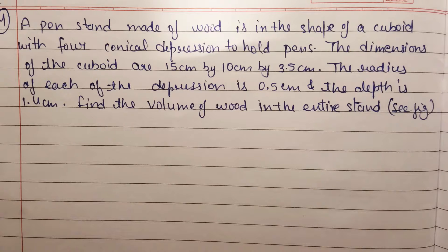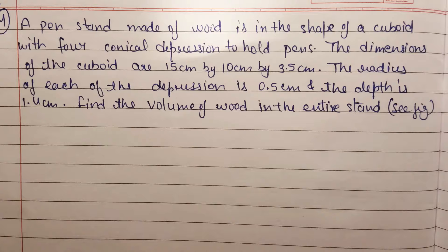We have a statement: a pen stand made of wood is in the shape of a cuboid with four conical depressions to hold pens. We have a pen stand made of wood, it's a cuboid shape, with four conical depressions to hold pens, so that in the depressions we can hold pens.